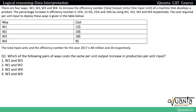It will be based upon ratios and percentages. There are four ways W1, W2, W3, and W4 to increase the efficiency number, which is total output units per one input unit of a machine that develops a product. Basically, if you give one input unit to a machine it will transform it into multiple output units. The percentage increase in efficiency number is 15%, 12.5%, 25%, and 10% by using W1, W2, W3, and W4 respectively.